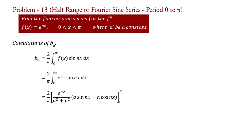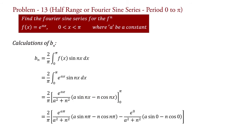Putting the values of the limits: bn = (2/π) · { e^(aπ) / (a² + n²) · [a sin(nπ) − n cos(nπ)] − e^0 / (a² + n²) · [a sin(0) − n cos(0)] }.